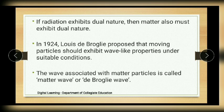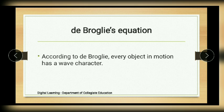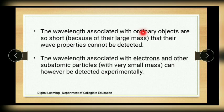The waves associated with matter particles are called matter waves or de Broglie waves. According to de Broglie, every object in motion has a wave character, but the wavelength associated with ordinary objects like a ball or bus are so short because of their large mass that their wave properties cannot be detected. The wavelength associated with electrons and other subatomic particles with very small mass can be detected experimentally.